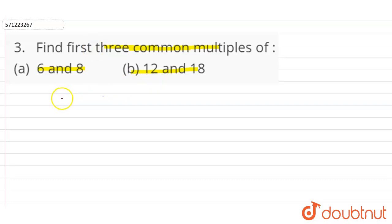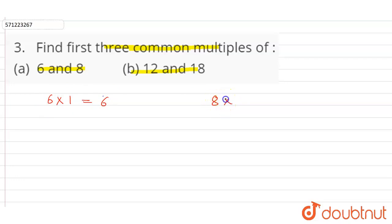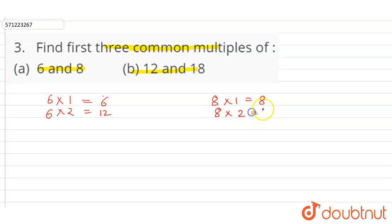Multiples means when we multiply the given number by some natural number. So 6 × 1 = 6 and 8 × 1 = 8. When we multiply both numbers by 1, we get 6 and 8 — these are not common multiples. Next, 6 × 2 = 12 and 8 × 2 = 16.